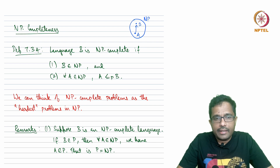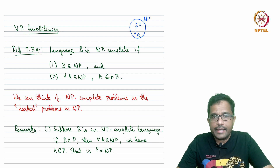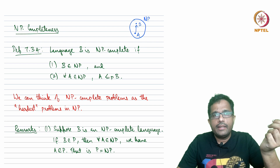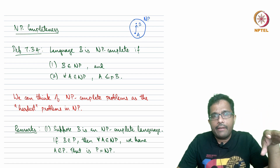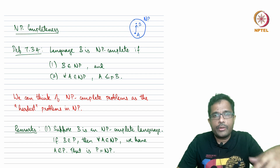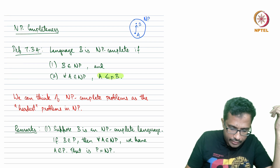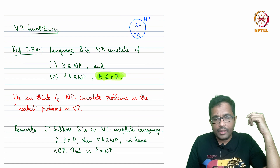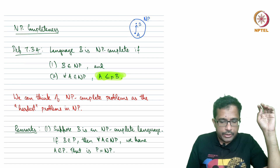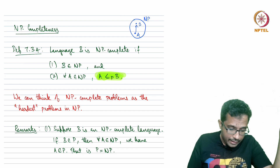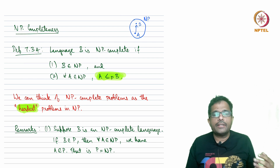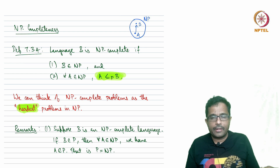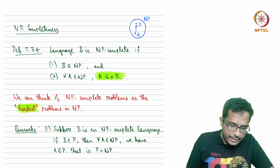If we can decide B, that indirectly gives a way to decide any language A that is in NP. So two things: first, B must be in NP, and second, all languages in NP must be reducible to B. What this means is that if we have a way to decide B, we have a way to decide any language in NP because of this reduction. It is convenient to think of NP-complete languages as the hardest problems in NP, because if we have a way to decide an NP-complete problem, we have a way to decide any problem in NP.